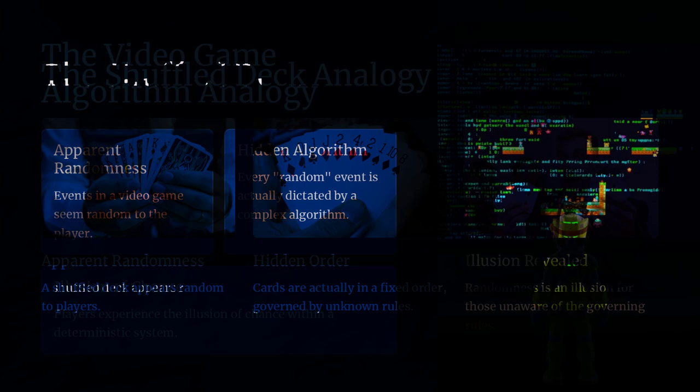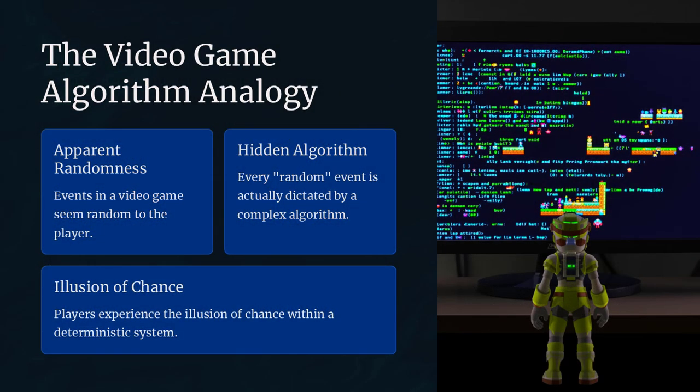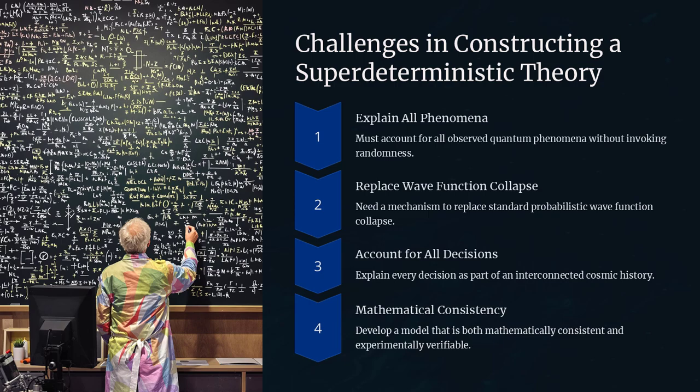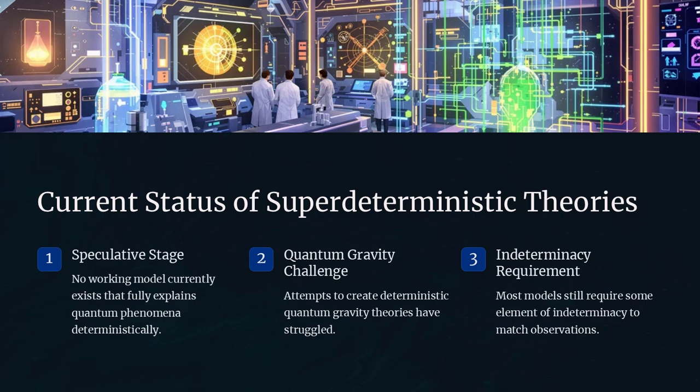It proposes that the universe is completely deterministic and that everything is linked in a way that ensures quantum correlations do not violate any hidden local laws, avoiding the need for non-local entanglement.